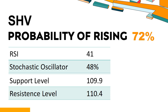SHV's short-term support level is 110.1. If it falls below 110.1 during the session, it will have a chance to test 109.9. SHV's short-term resistance level is 110.3. If it breaks through 110.3 during the session, it will look up to 110.4.